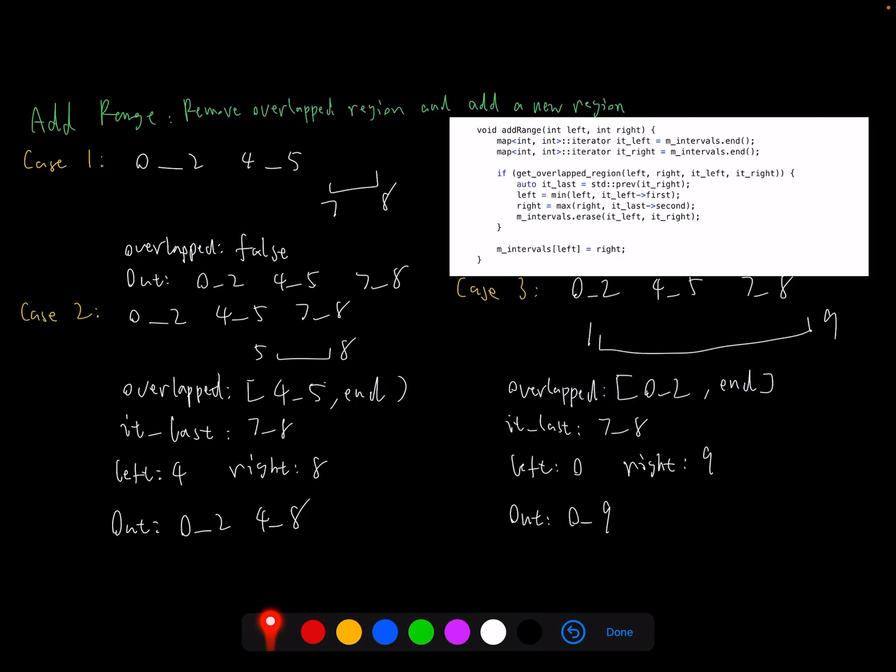So next one, add range. What we will do in add range is we will remove overlap range, then we add a new range if needed. So here, for example, the query is 7 to 8. We cannot find any overlap, so here we directly add a range based on the query range. Then a more complicated case 2 - we can find overlap range with this query. The overlap range returns 4 to 5 and the right is the end. So here we're going to do these implementations. Firstly, we will get the first region before our right close one, which is 7 to 8.